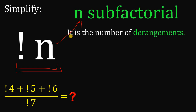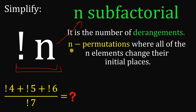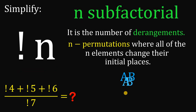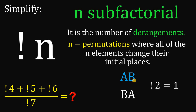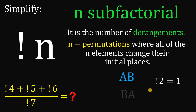Sub-factorial is the number of derangements. A derangement is a permutation of n elements where all elements change their initial positions. For example, if we have two elements a and b, we can rewrite this as b, a — where a is not in its initial position and b is not in its initial position. So 2 sub-factorial equals 1, because there's only one way to arrange two elements such that all elements change their initial position.